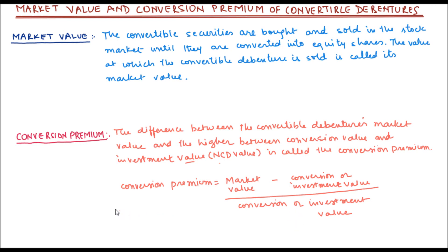So these are the two key terms for convertible debentures: one is market value, and the other is conversion premium. In subsequent videos, we will also look at how to solve examples to find out the conversion premium, market value, and so on.